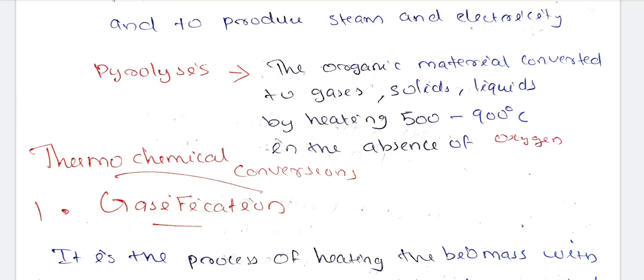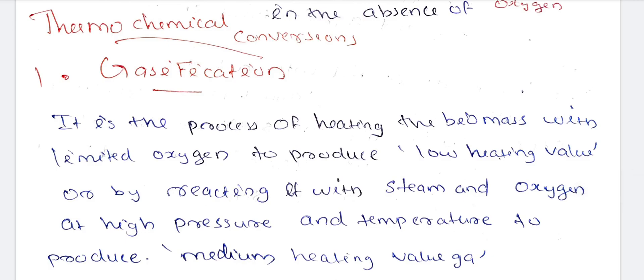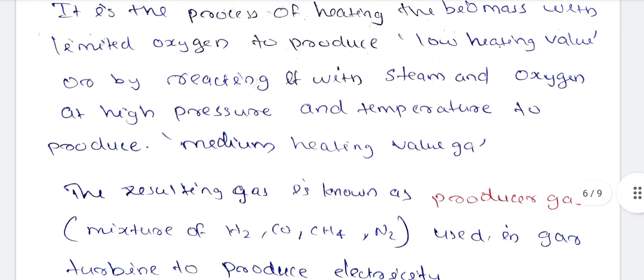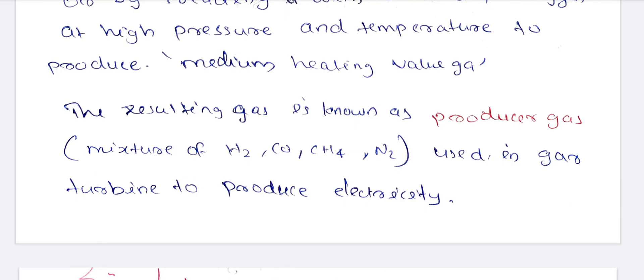Next, thermochemical conversions: gasification. Gasification is a process of heating the biomass with limited oxygen to produce low heating value gas, or by reacting it with steam and oxygen at high temperature to produce medium heating value gas. The resulting gas is called producer gas. Producer gas is a mixture of hydrogen, carbon dioxide, methane, and nitrogen, and is used in gas turbines to produce electricity.